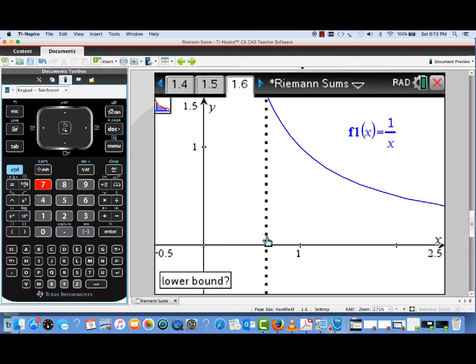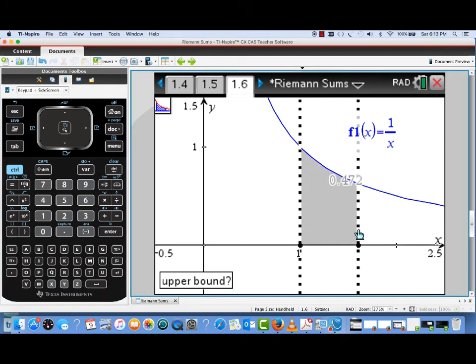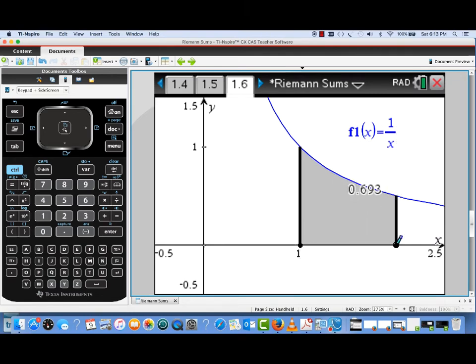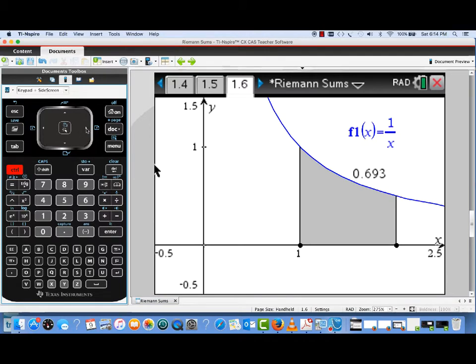So I'm choosing a lower limit of integration of 1. Now I'll choose an upper limit of integration 2. Do that right on the graph, and then it's calculated the definite integral. I can see that that definite integral value is approximately 0.693.